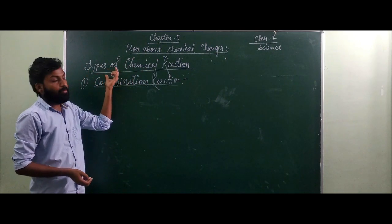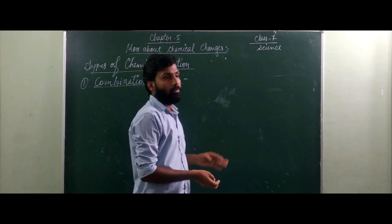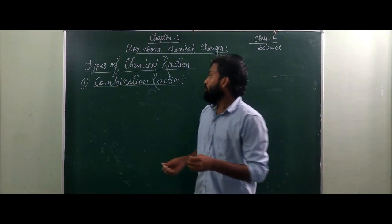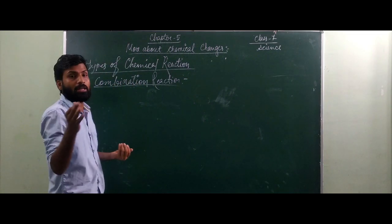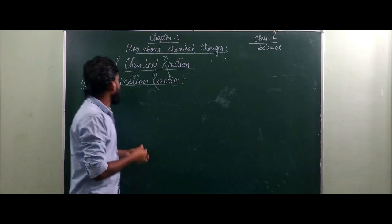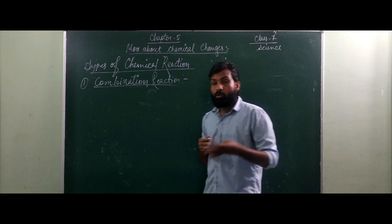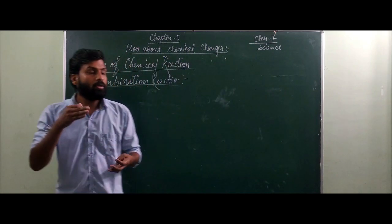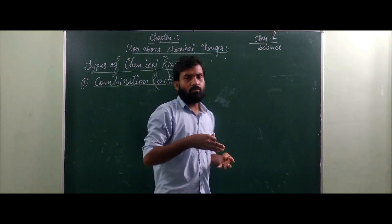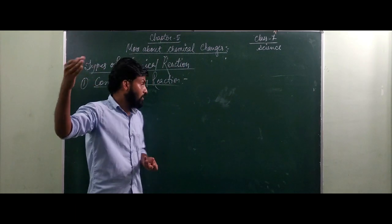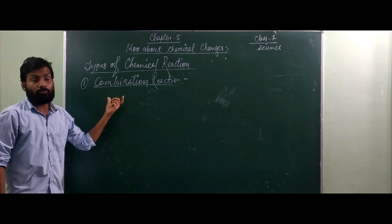Now we are going to discuss about the types of chemical reaction. Chemical reactions are of many types. For now we will discuss only around three to four types. If you go to higher classes you will get many types — like combination, decomposition, displacement, double displacement, oxidation, reduction, corrosion, rancidity, and more.